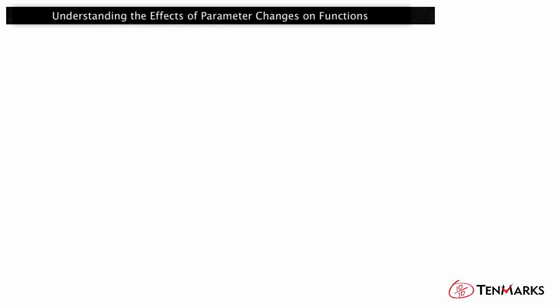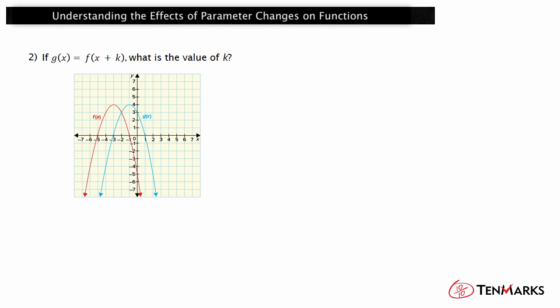Let's look at another example. If g(x) = f(x + k), what is the value of k? The notation f(x + k), with the k being added to the x value, tells you that you are looking for a horizontal translation. Each point shifted 2 units to the right. In a horizontal translation, negative k values shift to the right. So k must be negative 2. This transformation could be represented by the mapping g(x) = f(x − 2).